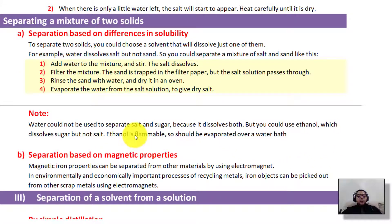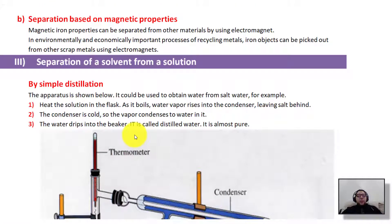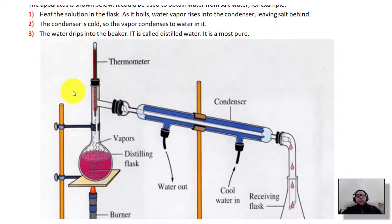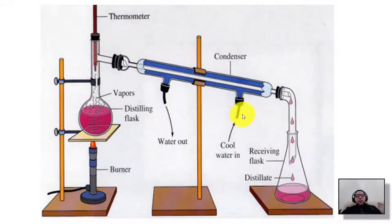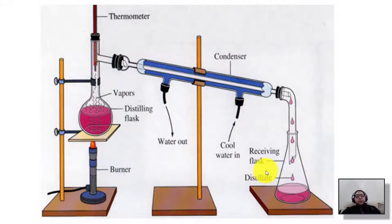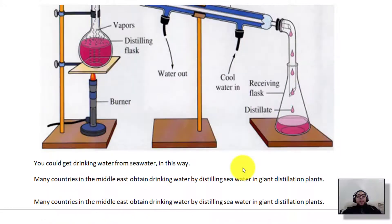We also spoke about how to separate liquids from a solution through simple distillation. You place the salty water or solution in the flask, heat it with the Bunsen burner, the water changes into vapor, the vapor goes inside the condenser's inner tube, while the outer tube has cold water to cool the vapor back into liquid, which is collected. This process is called simple distillation and is used in some companies to convert salty water into drinking water.